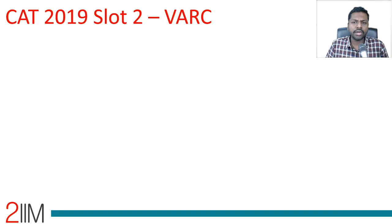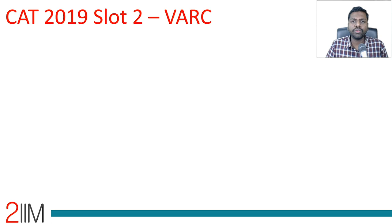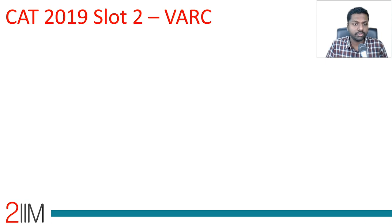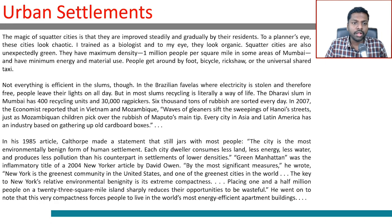We will discuss an RC passage from CAT 2019 Slot 2, which is about urban settlements. First, we are going to look at how to read the passage, what we get out of it, what we understand, and then move on to the questions and solve them.